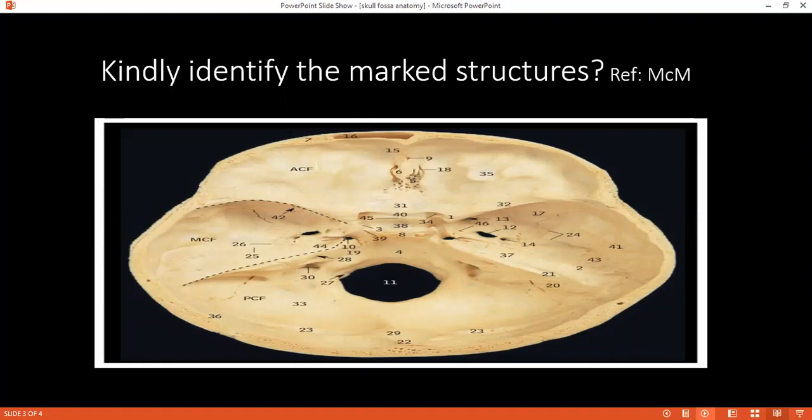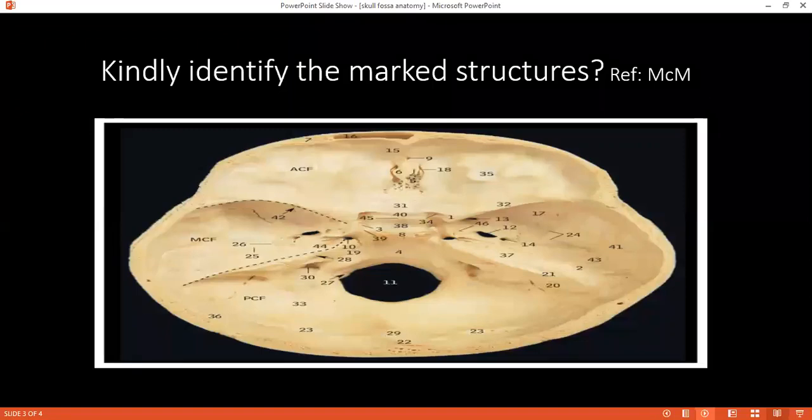And the floor consists of what? The floor consists of the clivus and the occipital bone and some part of the temporal bone, the petrous part of the temporal bone, condylar and basilar parts.